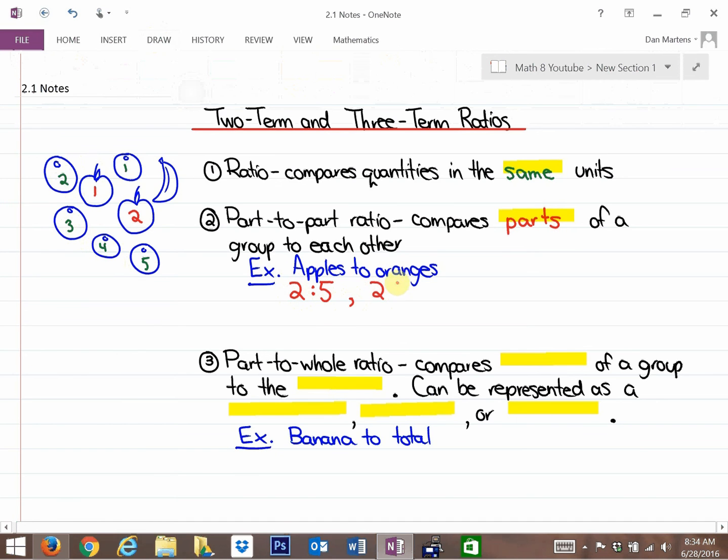You could write it as 2:5 with the colon, you could write it as 2 to 5 with the word 'to', or you could write it as 2/5. So that's ratio notation—those are the three ways you can write ratios—and the order is important. So if it's apples to oranges, it has to be two before the five and not the five before the two.